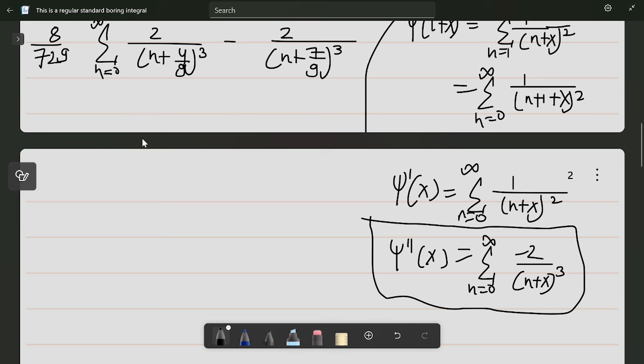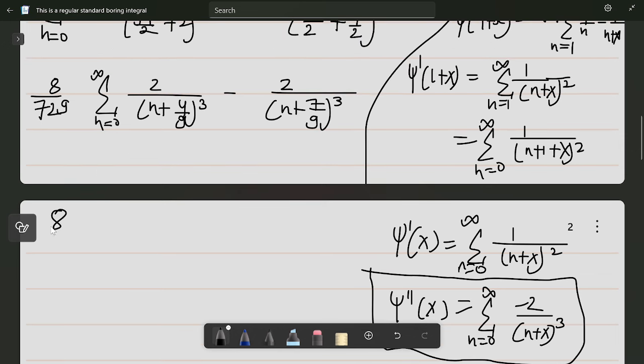This is 8/729 times [ψ''(4/9) - ψ''(7/9)].